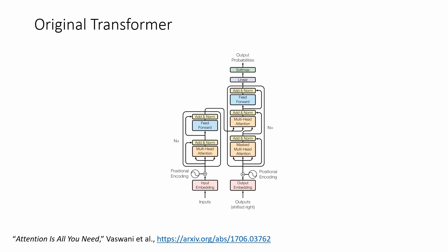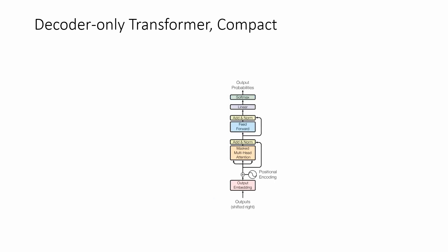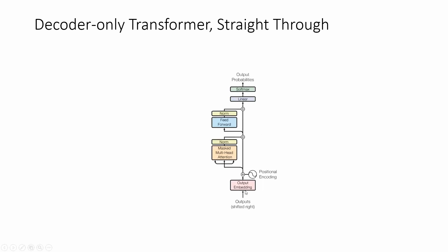For a decoder-only model, you won't have the encoder part on the left — only the part on the right, shown with a big red X. We can make the residual connection clearer by drawing the diagram differently: keep the residual connection straight and draw attention and feed-forward to the side. Then it becomes clear this is a residual architecture. If all weights were zero, data could pass straight through unmodified.